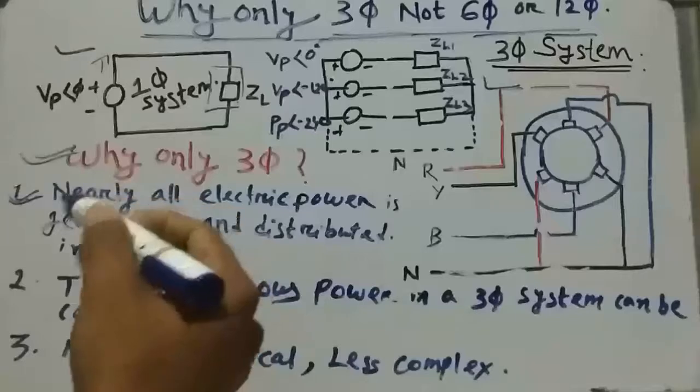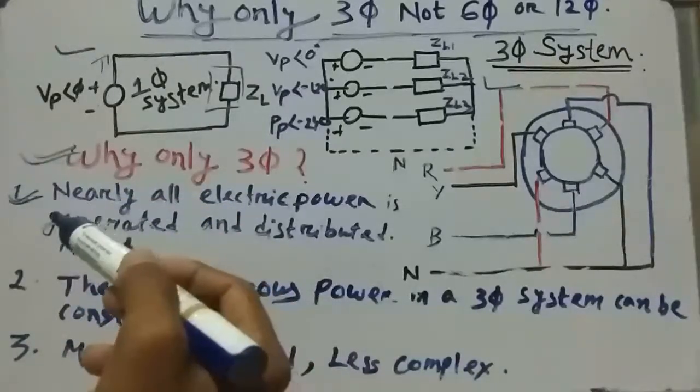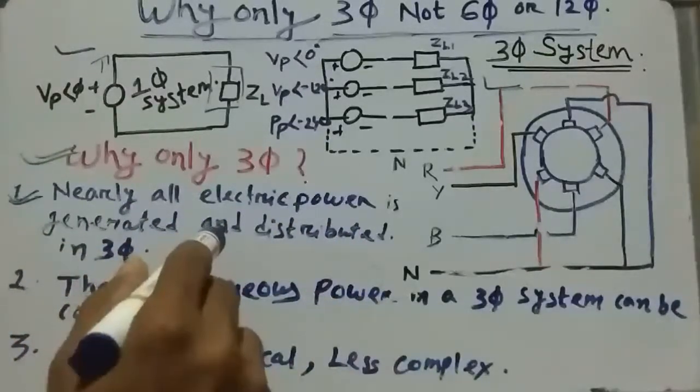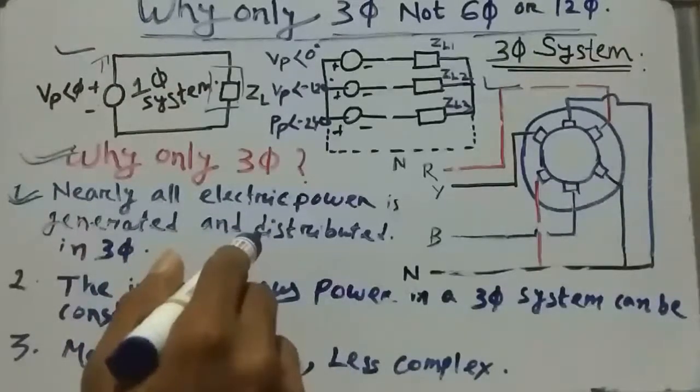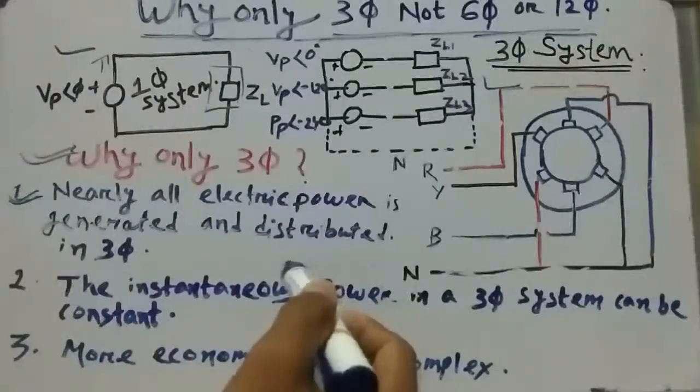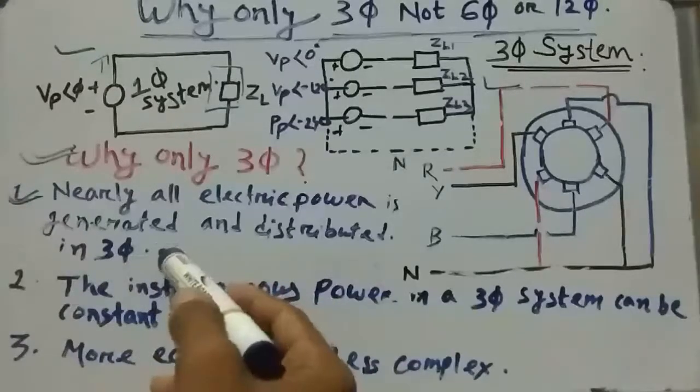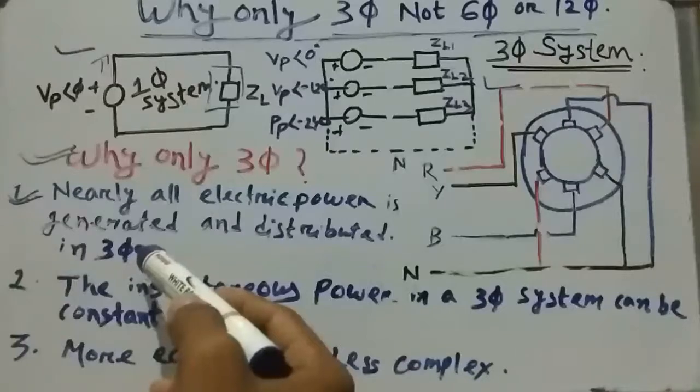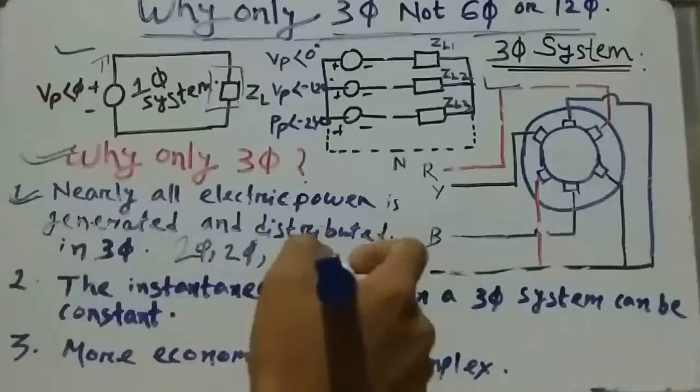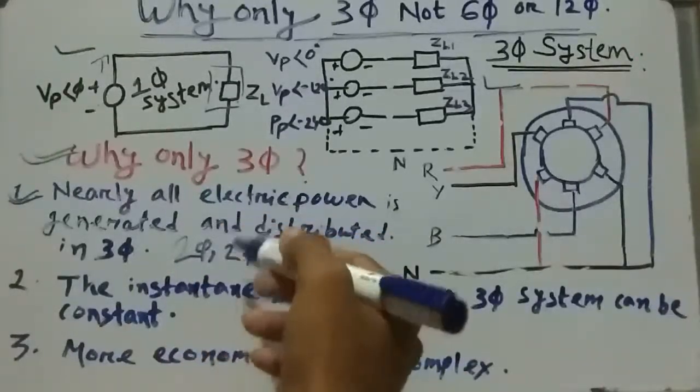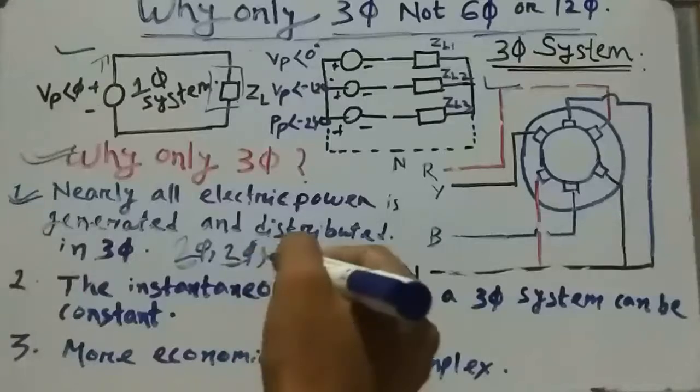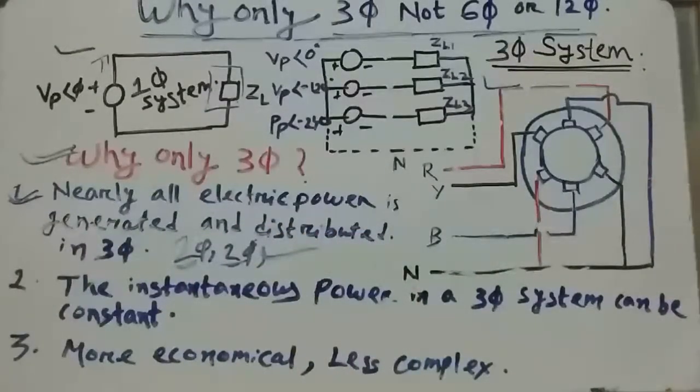At least 3 reasons. Firstly, nearly all electric power is generated and distributed in 3 phase at a frequency of either 50 hertz or 60 hertz. Indian standard frequency is 50 hertz and the US frequency is 60 hertz. Single phase or 2 phase required, we can bring it from the 3 phase system. There is no need to generate the single phase and two phase. Even when more than 3 phases are needed...